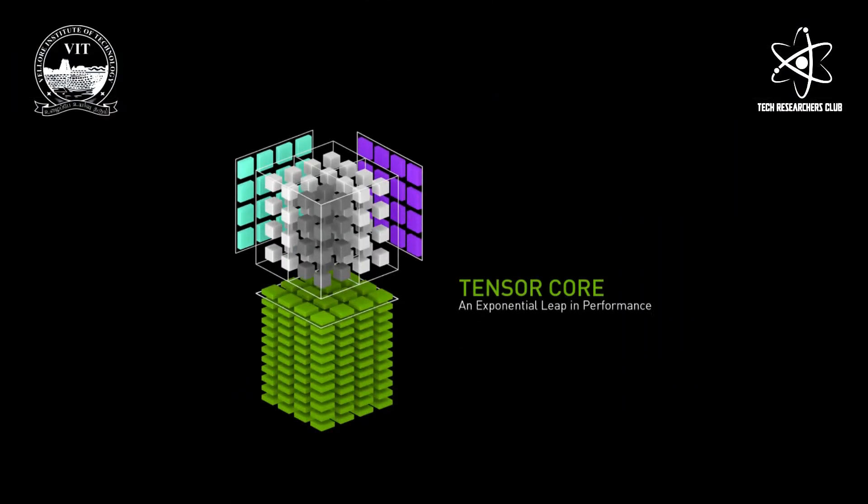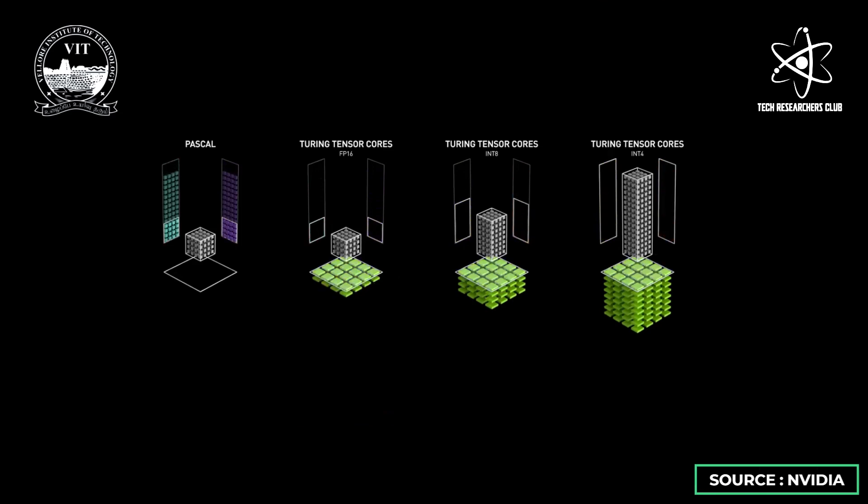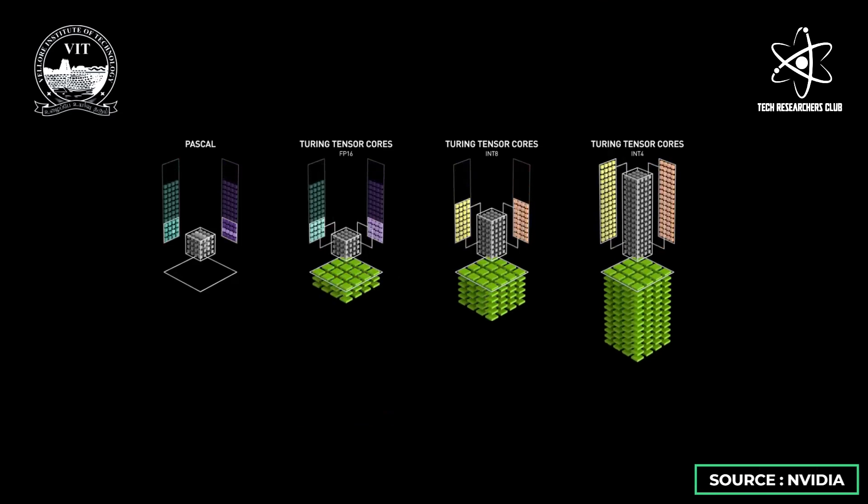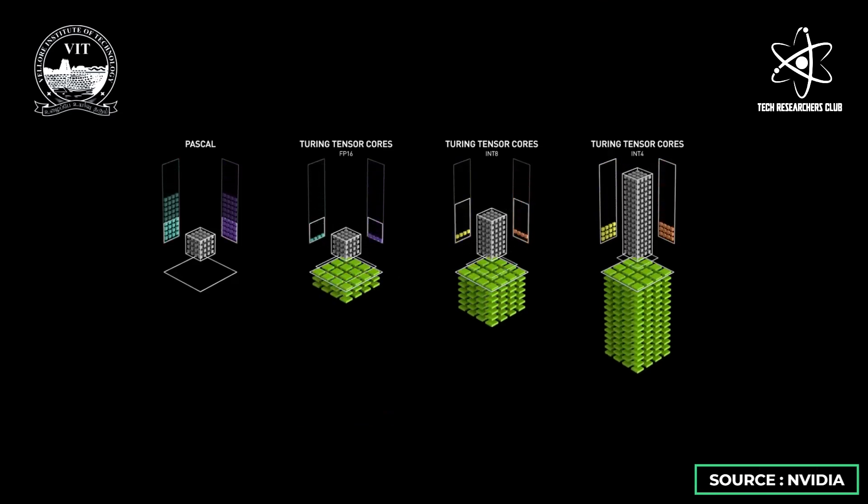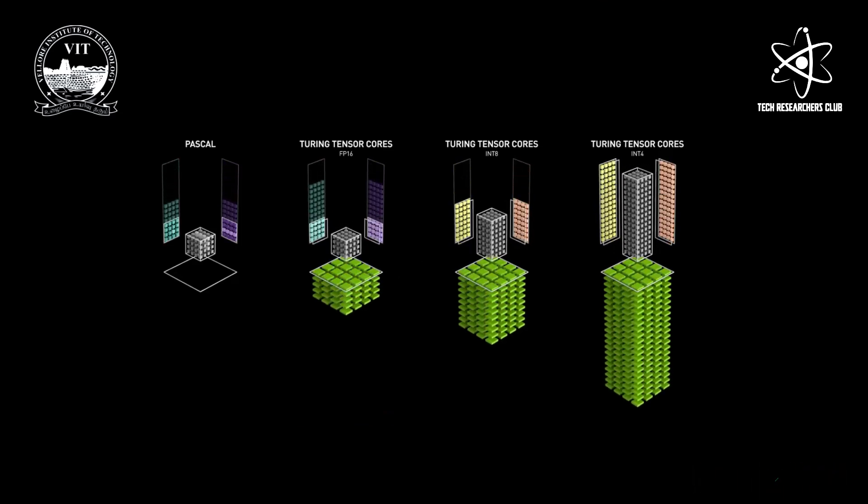Tensor Cores are basically data processors — specifically multidimensional data. They work on the principle of multiply-add computation. So if you have two FP16 cores that are low precision, they will be converted to one FP32 core. All these working together give you a much more efficient and much faster output than CUDA Cores.